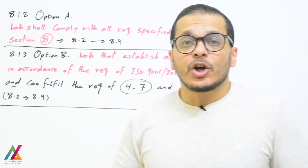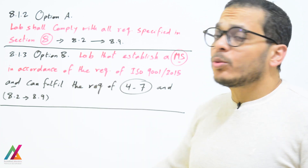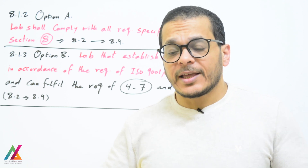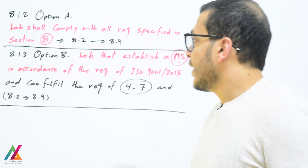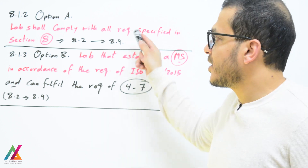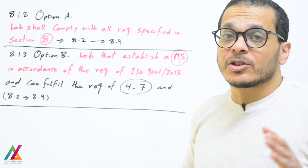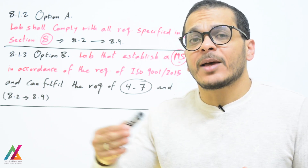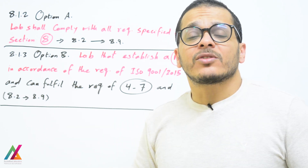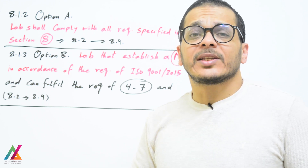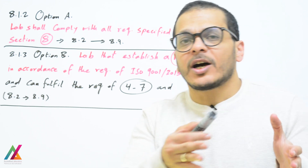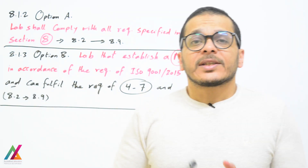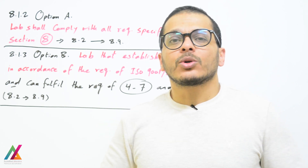Option A applies when the lab is not yet accredited according to ISO 17025:2017 and needs to become accredited. In this case, the lab shall comply with all requirements specified in sections 8.1 through 8.9, and will be assessed against those requirements as listed in ISO 17025:2017, in addition to clauses 4 to 7.